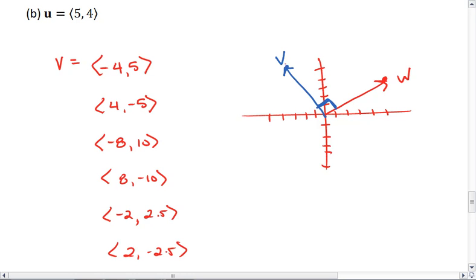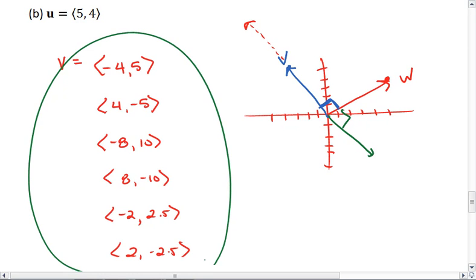Or I can double the length of v—that just extends this vector. Or I could send v in a negative direction; it's still going to be a right angle. So all of these are possible solutions for an orthogonal vector to u. There are actually infinitely many solutions.